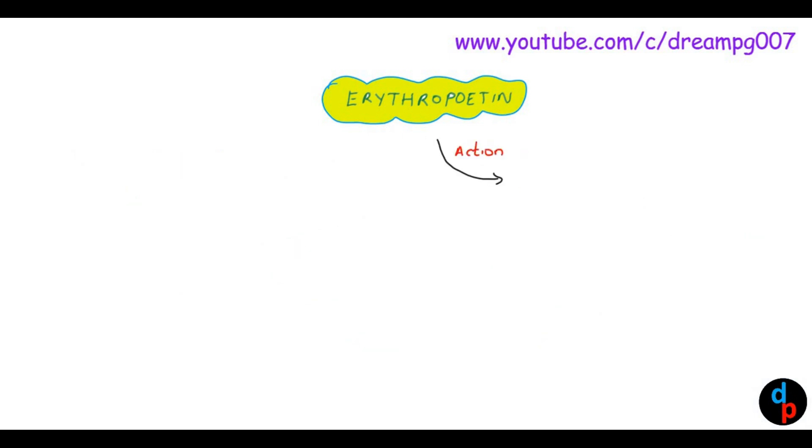What's the function of erythropoietin? Erythropoietin increases the number of stem cells in the bone marrow, which in turn increases RBC synthesis. It also increases hemoglobin synthesis. As we know, hemoglobin contains a heme part as well as a globin part.